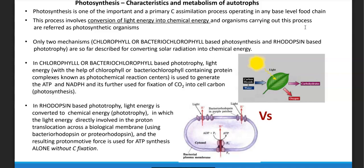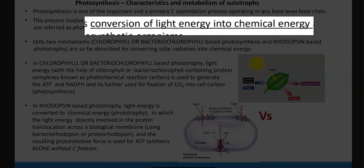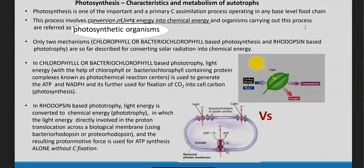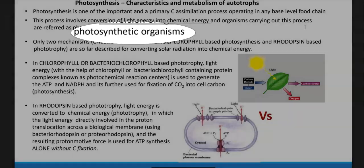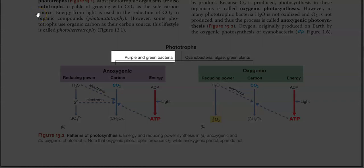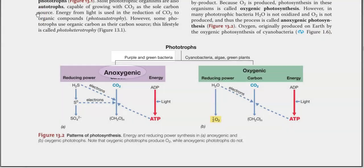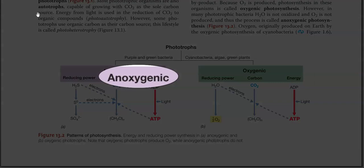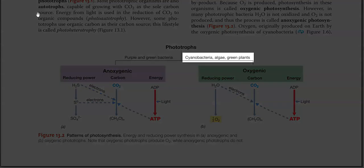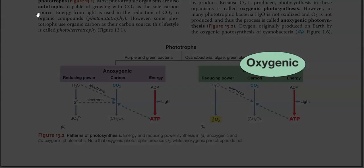This process involves conversion of light energy into chemical energy, and the organism carrying out this process is referred to as a photosynthetic organism. Organisms carrying out photosynthesis are commonly referred to as phototrophs. They could be of two kinds: one is the purple and green sulfur bacteria, which are commonly involved in the anoxygenic kind of photosynthesis process, whereas the other one is cyanobacteria, algae, and green plants, which are involved in the oxygenic way of photosynthesis.